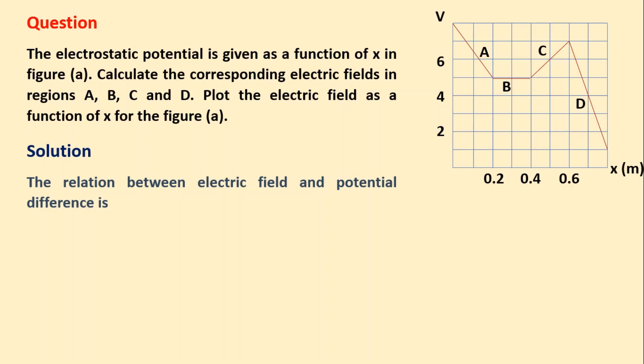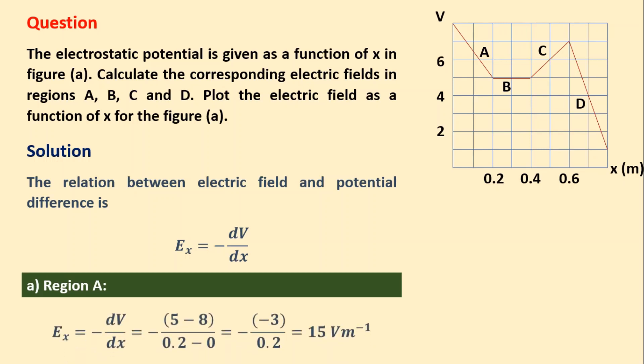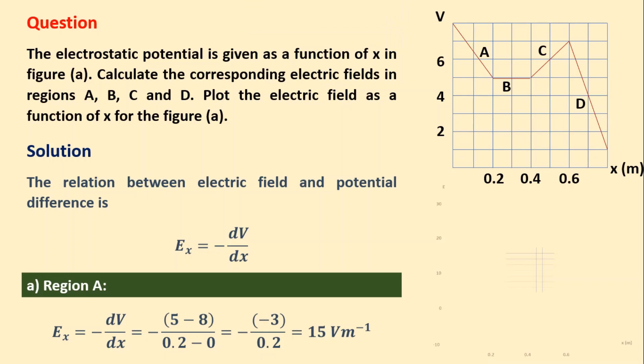Solution. The relation between the electric field and potential difference is E_x equals minus dV by dx. The electric field is the negative potential gradient at that point.